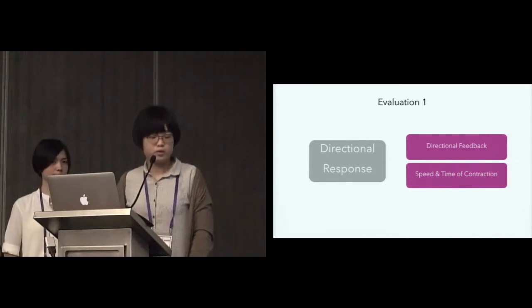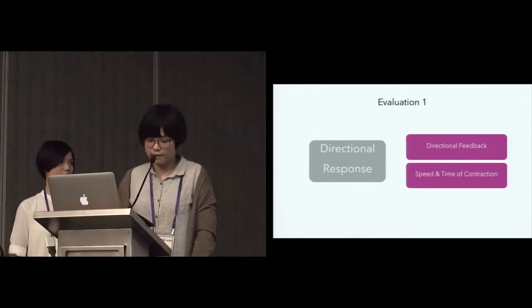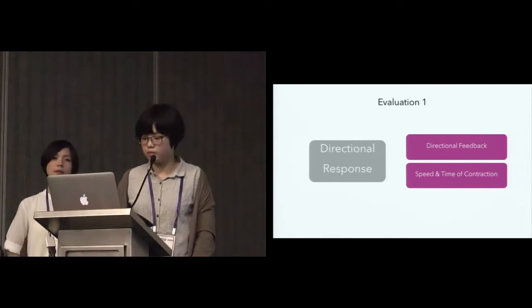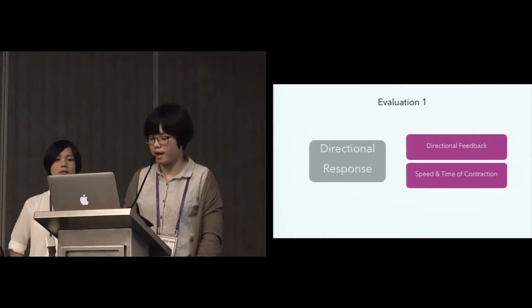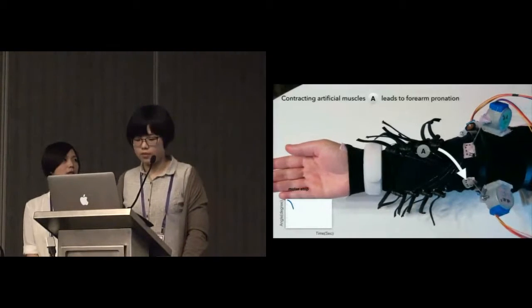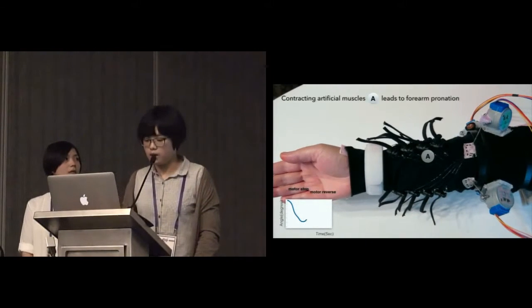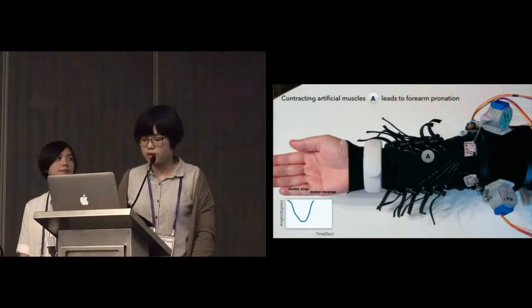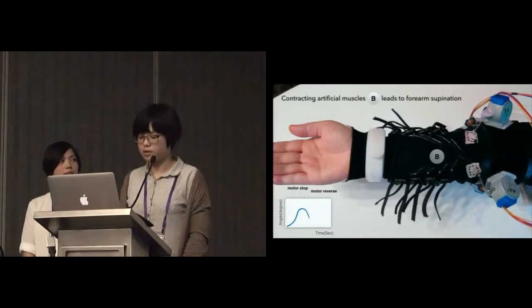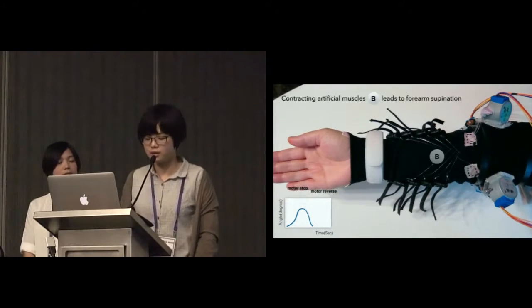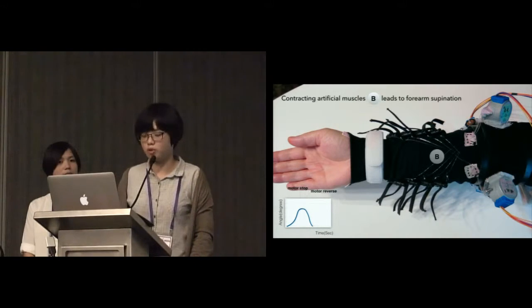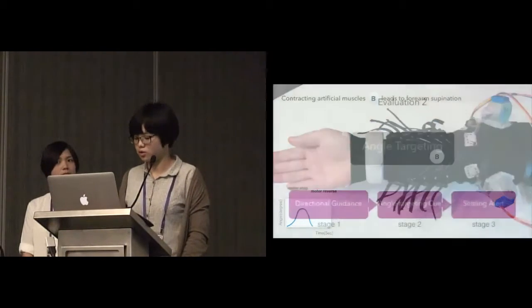We've done preliminary study to explore the effects of this sleeve. For evaluation one, we want to know if the user can be guided to the right direction by giving only tactile feedback and how the speed and time of contraction cause different feedback. This evaluation shows that with faster contraction of muscles, it leads to faster response. Also, the longer the contraction time, the bigger angle the user reacts to the tactile feedback. Users also commented that there is a clear difference between two stimuli, the contraction and relaxation of muscles.